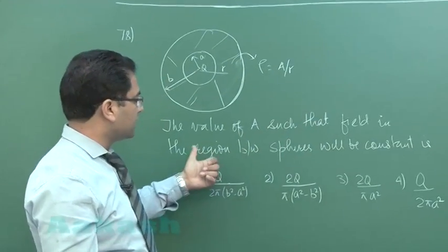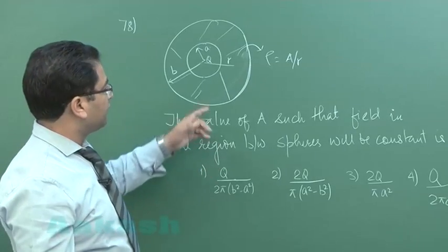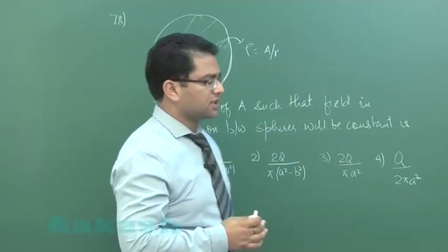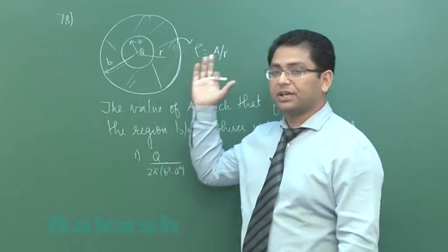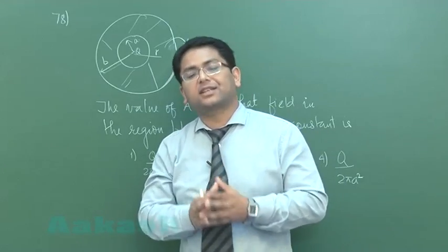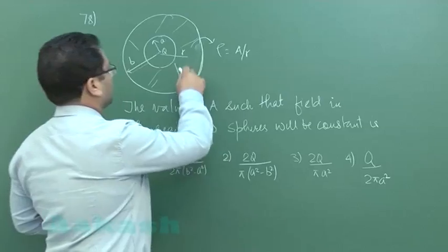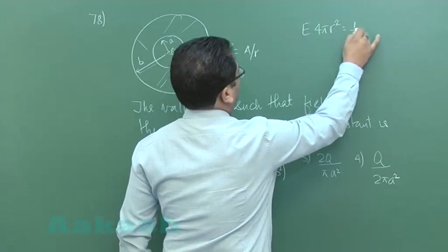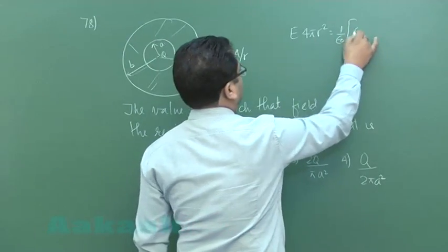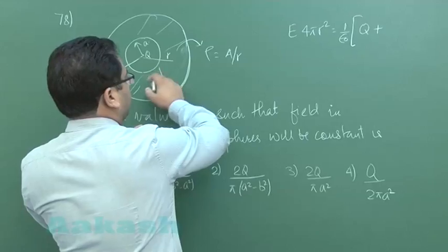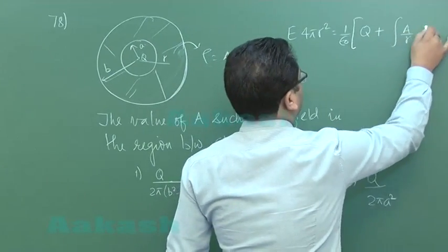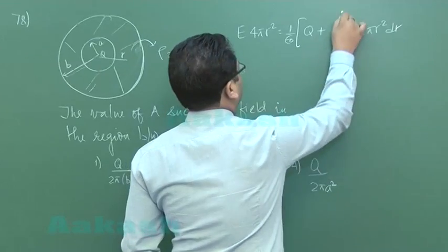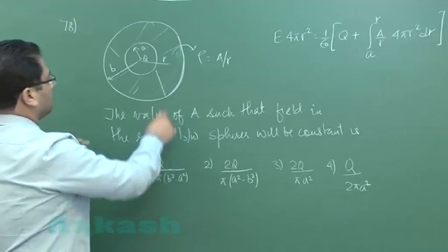The question asks for the value of α such that the electric field in the region between the spheres is constant. Since the charge distribution a/r is radially symmetric, we can effectively use Gauss's law to calculate the field. At distance r, using a Gaussian surface as a sphere, E times 4πr² equals 1/ε₀ times the charge enclosed. The charge enclosed would be q plus the integral of (a/r) times 4πr² dr.